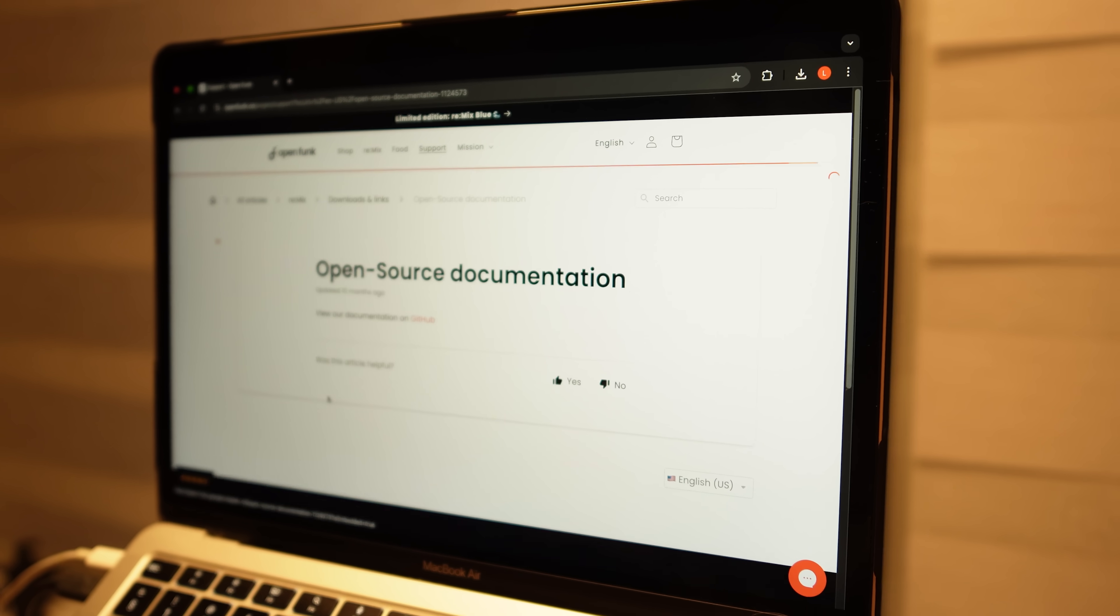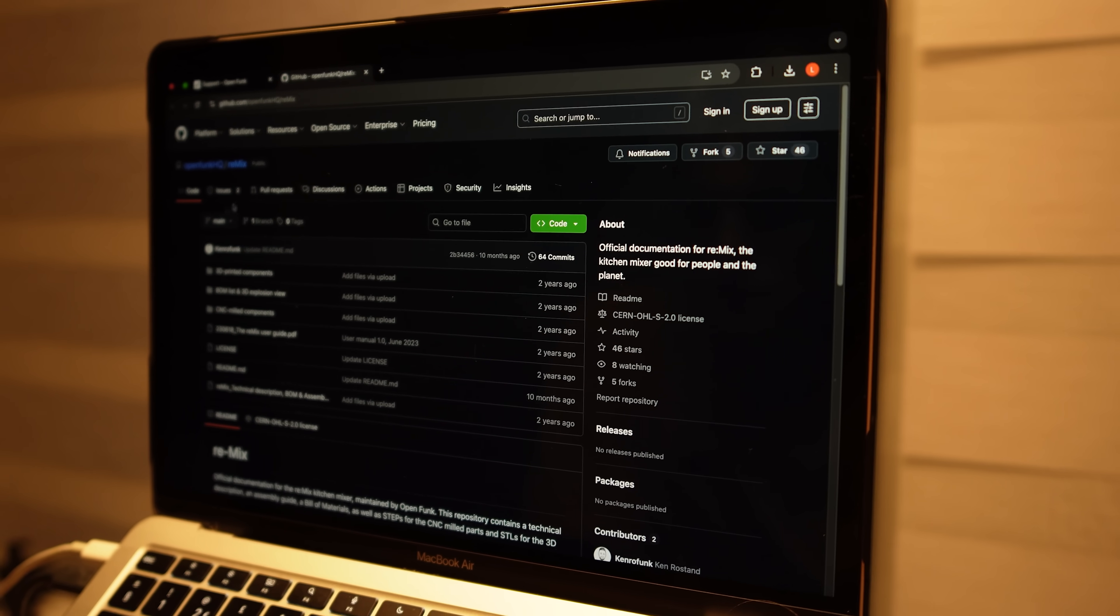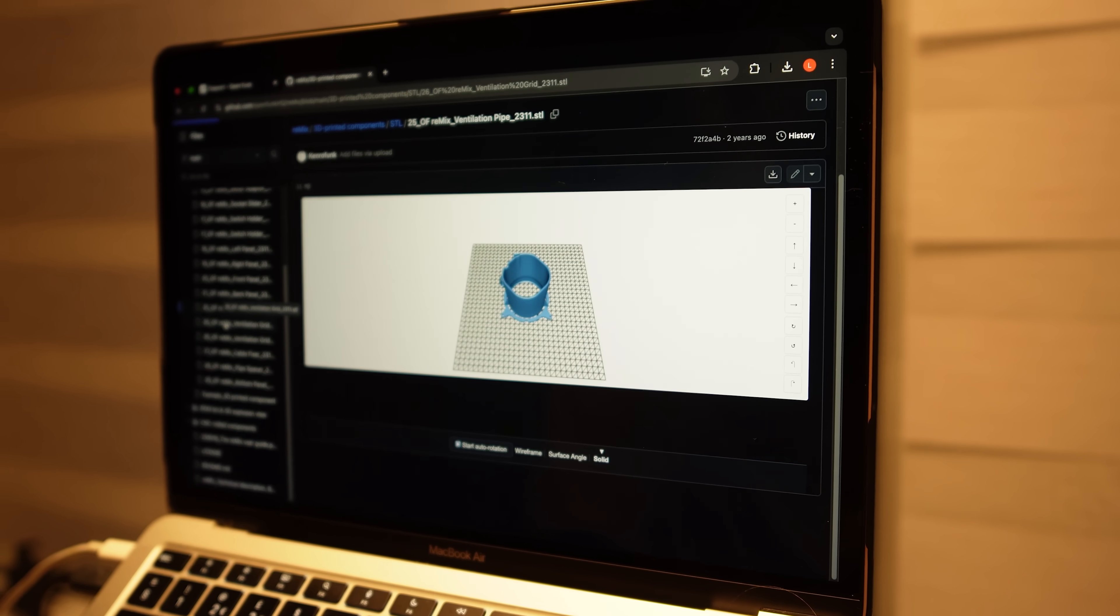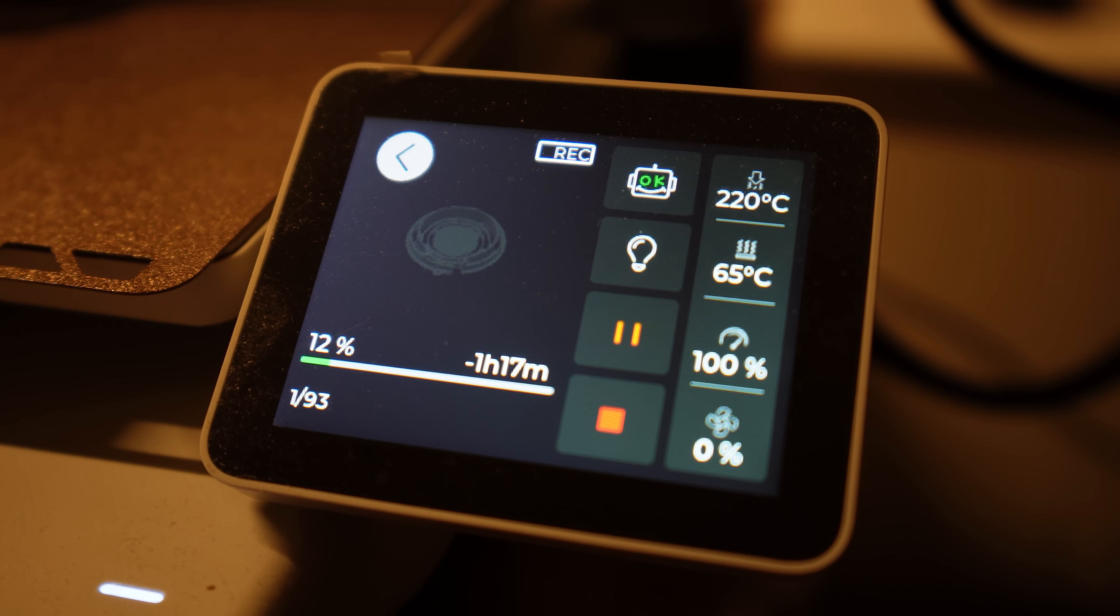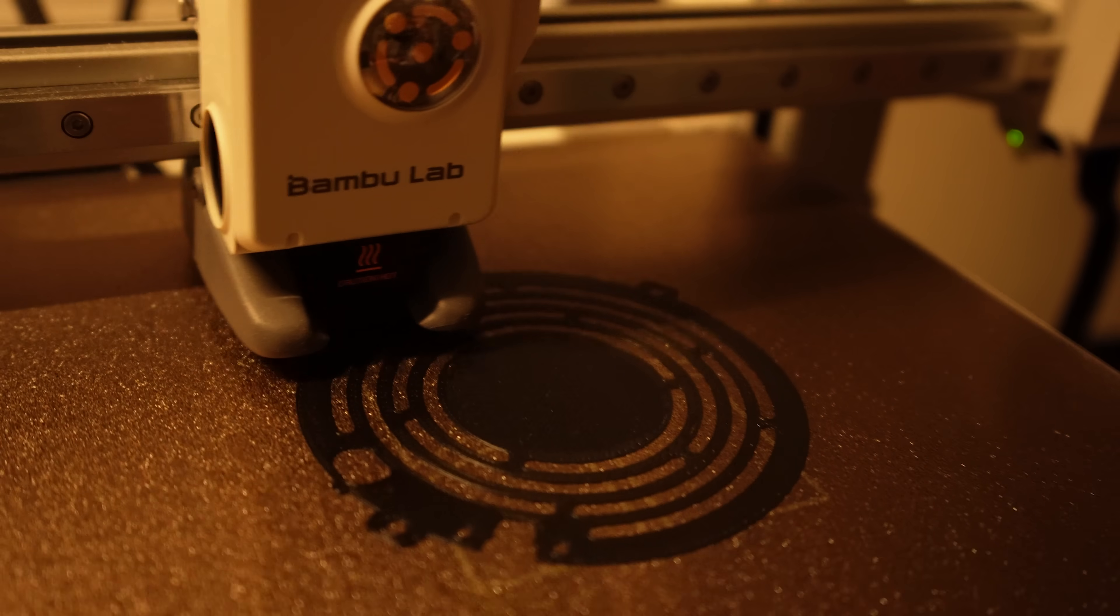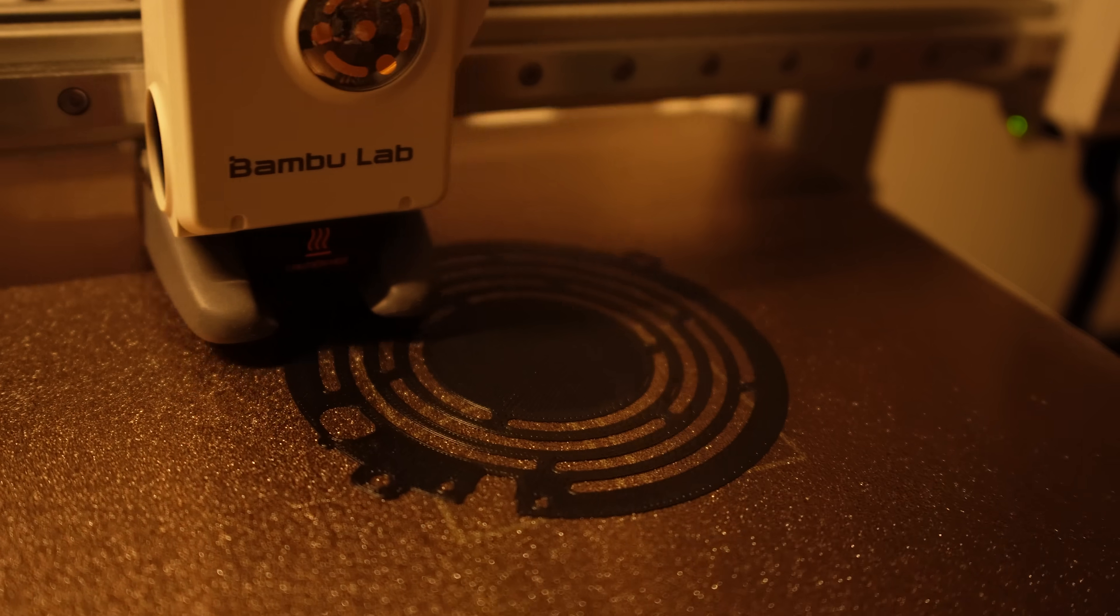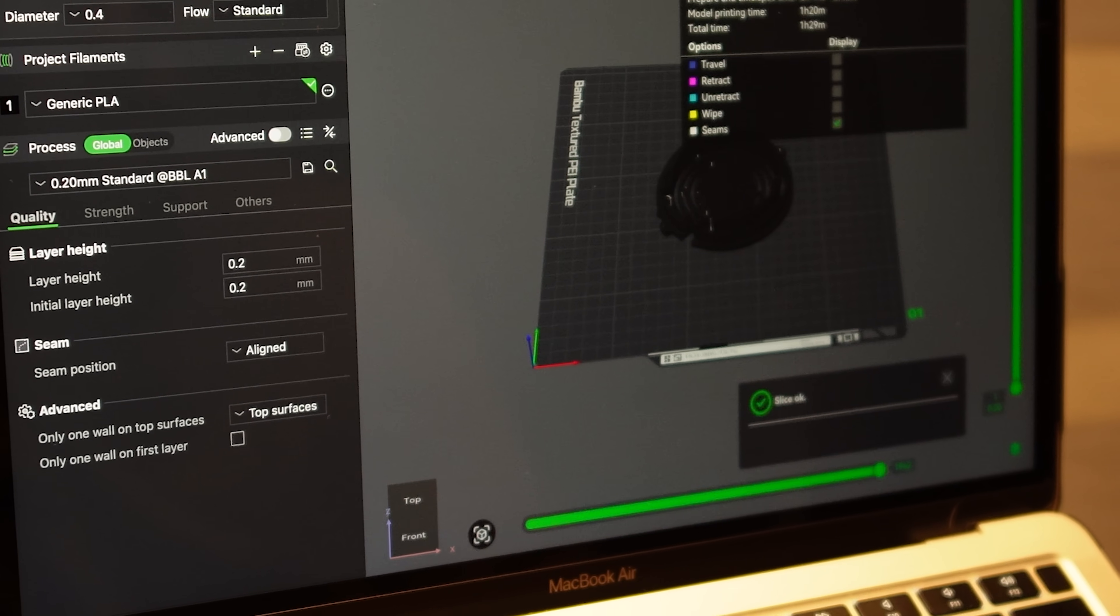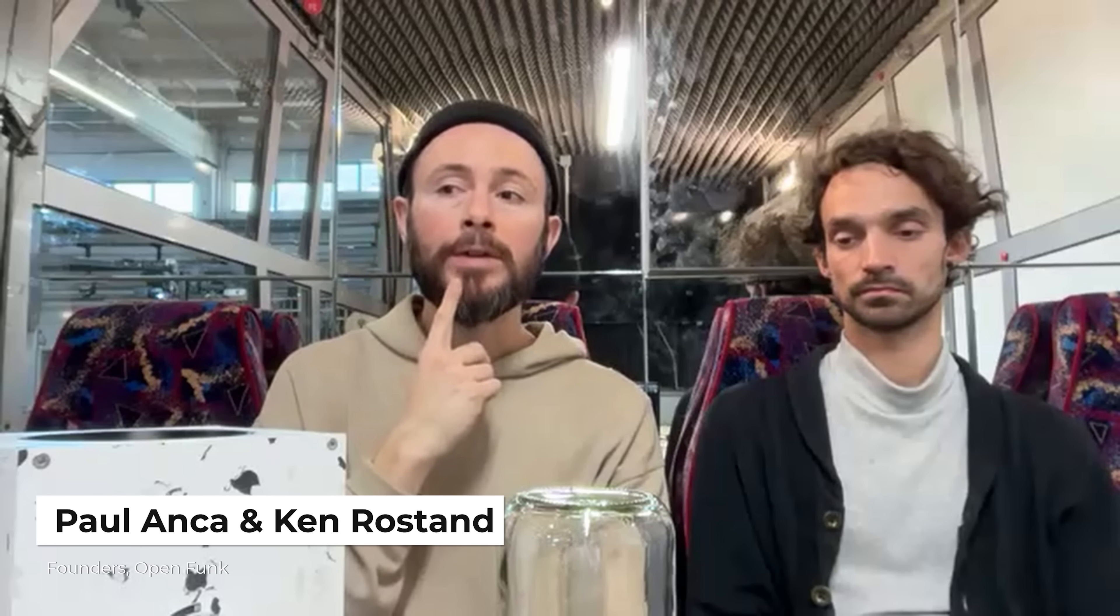For example, the source files for all the CNC milled and 3D printed parts of the blender are available on a public repository online. This means as a user, you could go to a fab lab or repair cafe and print your own replacement parts without ever actually having to go back to OpenFunk. In fact, the files and documentation are so complete that you could even, if you really wanted to, build an entire mixer from scratch. What this also means is that OpenFunk's products can be kept in circulation indefinitely, regardless of what happens to the company in the future.